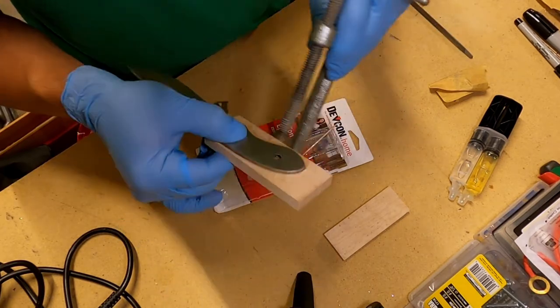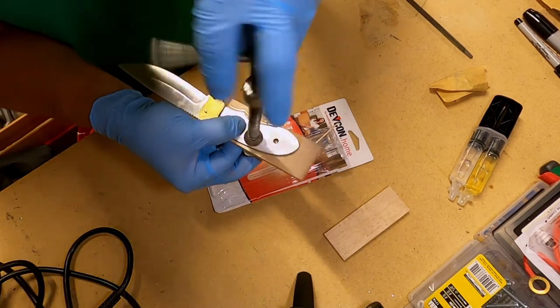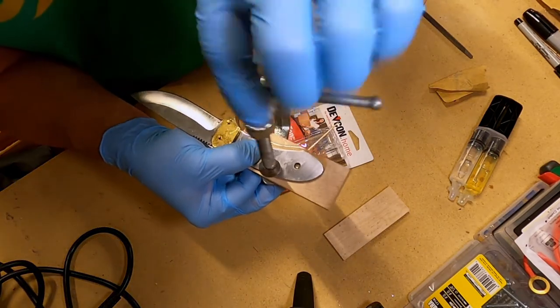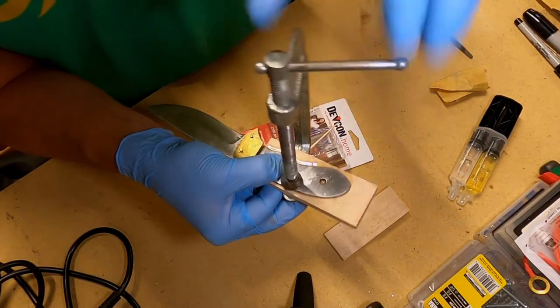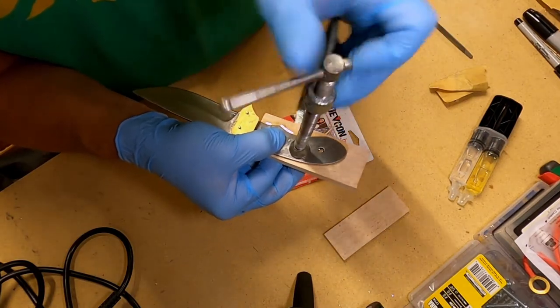Now you can use the vise that is provided with this if you don't have a C-clamp. Because I'm not using that vise, I'm just going to use the C-clamp.